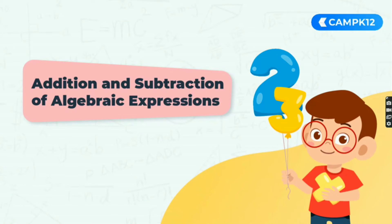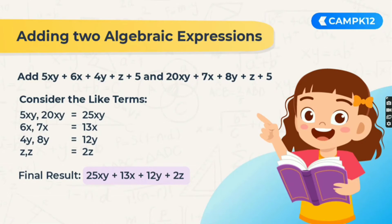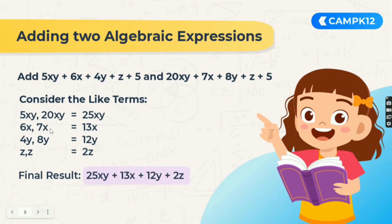Let's now move to addition and subtraction of algebraic expressions — a very important topic. We'll use the concept of like and unlike terms. Given two expressions: 5xy plus 6x plus 4y plus z plus 5, and 20xy plus 7x plus 8y plus z plus 5. We consider the like terms: 5xy and 20xy, 6x and 7x, 4y and 8y, z and z. Adding them: 5xy plus 20xy gives 25xy, 6x plus 7x gives 13x, 4y plus 8y gives 12y, and z plus z gives 2z. The final result is 25xy plus 13x plus 12y plus 2z.